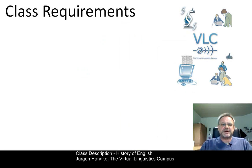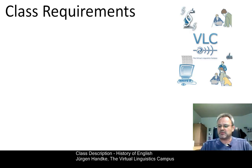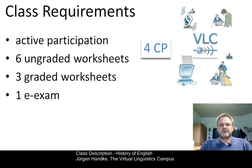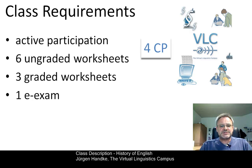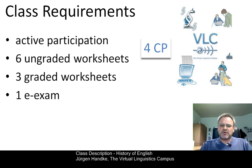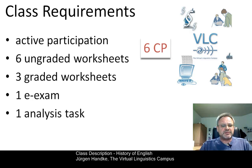You want to know what you have to do in order to get the class credits, where one credit is the equivalent of about 30 hours of workload. For four credits, you have to actively participate in our in-class meetings. We want you to do six ungraded worksheets, three graded worksheets, and one final exam. If you want more, you can also get six credits, but then you have to do the same thing plus a relatively complex analysis task at the end of term.